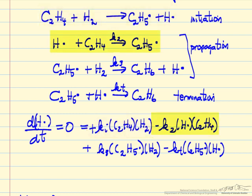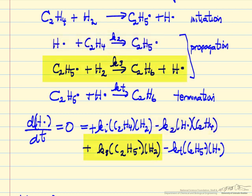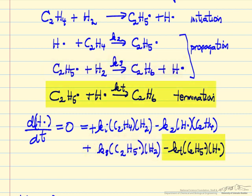In the second step, we're using up the hydrogen atoms, so a minus sign — first order in the hydrogen atom concentration, first order in ethylene. In the third step, we're making hydrogen atoms, so that's a plus sign. And in the fourth step, we're using them up, so a minus sign — with the termination rate constant, the concentration of the ethyl radical, and the concentration of hydrogen atoms.